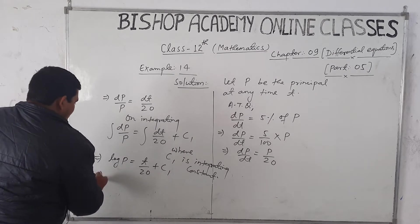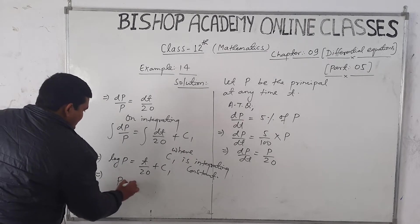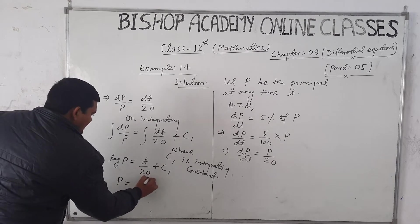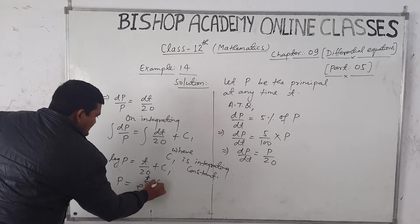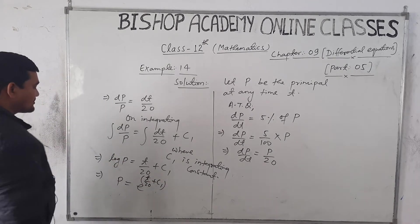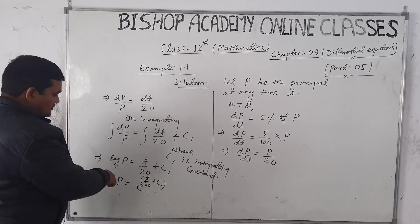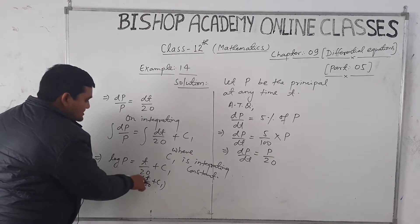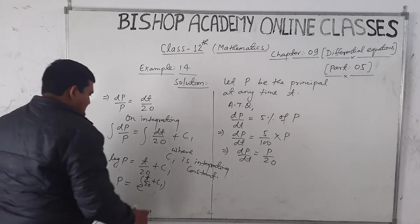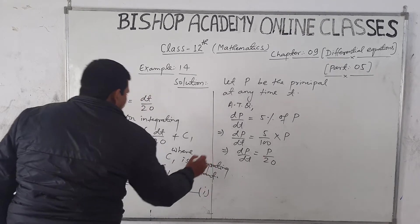From this, P = e^(T/20 + C1), which can be written as P = e^(T/20) × e^C1. Let this be equation number 1.